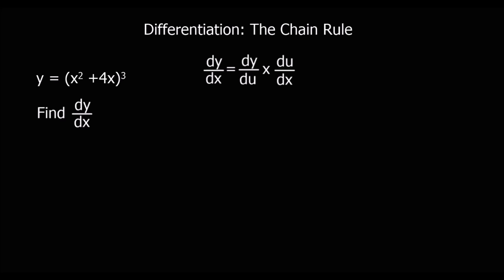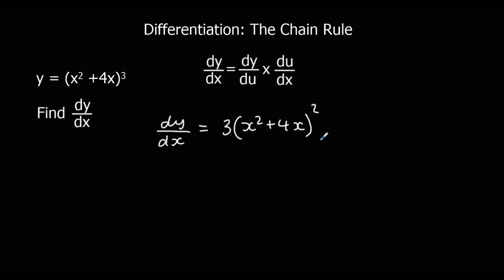So the same question again, and I'm going to show you the quicker way of doing the chain rule. We're going to say dy/dx is — we differentiate around the bracket normally, times by 3 and take one off the power, and then we just multiply by the bracket differentiated, which is 2x plus 4. And there we have dy/dx using the chain rule.